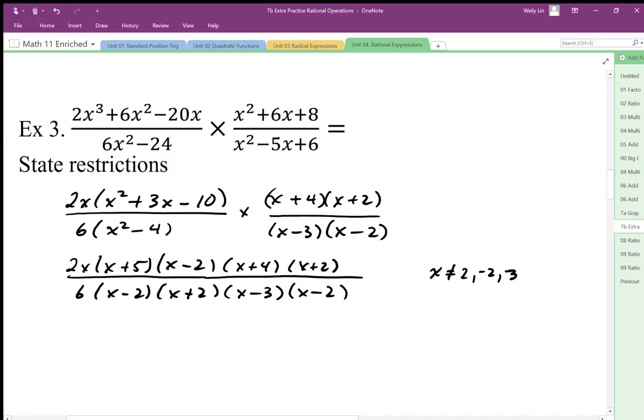Now once we state our restrictions, we can start canceling factors. Since it's all times, we can cancel. If there's pluses in between these factors, we cannot cancel. So we've got those factors cancel out. And then we can simplify the 2 and the 6 to 1 and 3.